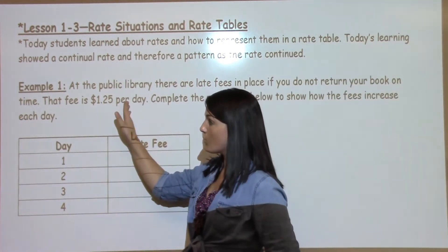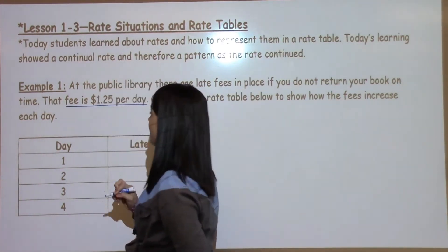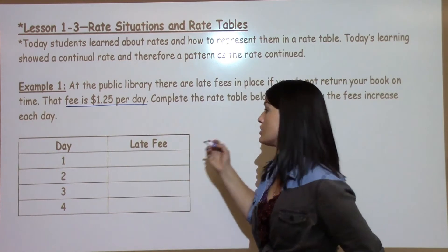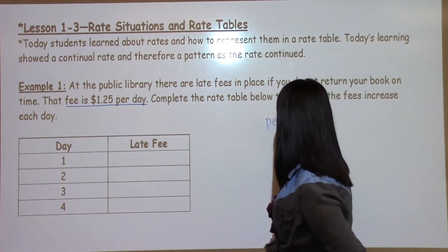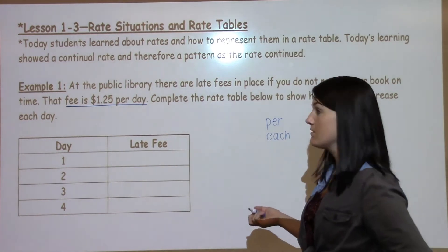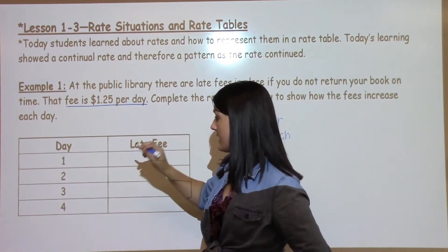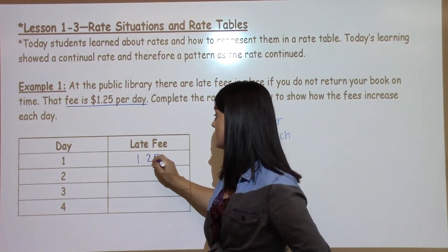So I know from the word problem that the fee is $1.25 per day. The word 'per' also means 'each' which will help us a lot in math. So I know that one day, per day, each day, it's going to cost $1.25.